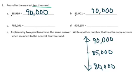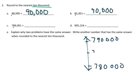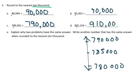So we're going to look at C, and C is a little bit different. It has 789,091. We're still looking at the 10,000th place. On a number line, that would be between 780,000 and 790,000. The midpoint would be 785,000, and so that one would be closer to 790,000. And then D, still looking at the 10,000th place, it would be 910,000.